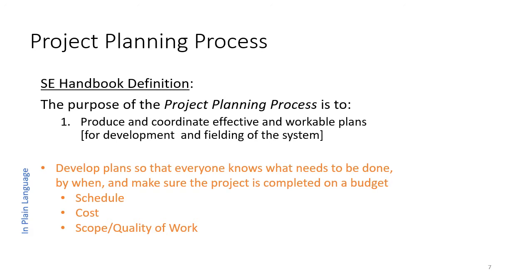As good system engineers and project managers, we know that there are three things that have to be traded off: schedule — the sequence of activities and timing; cost; and scope and quality of work. You can always make changes to the schedule by increasing or decreasing the scope, and you can always change the cost by changing the schedule or the scope and quality of the work. Schedule, cost, and quality all play into each other.